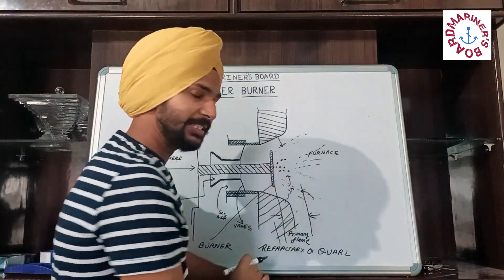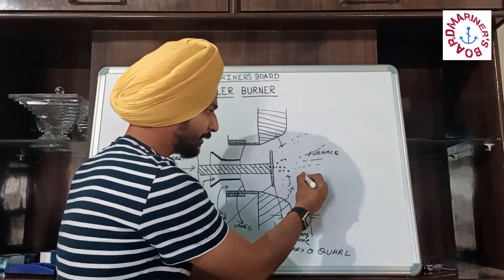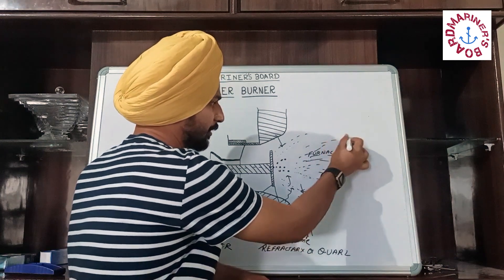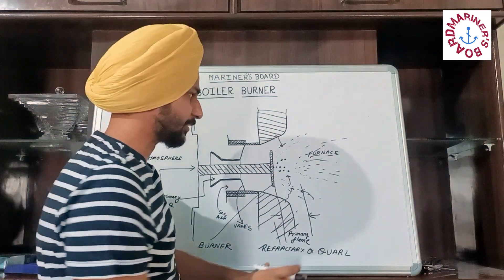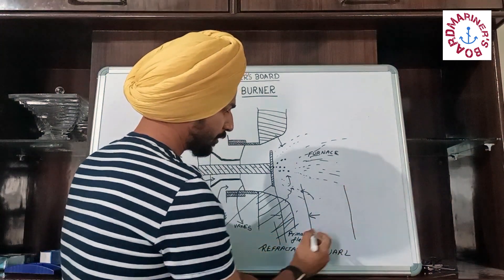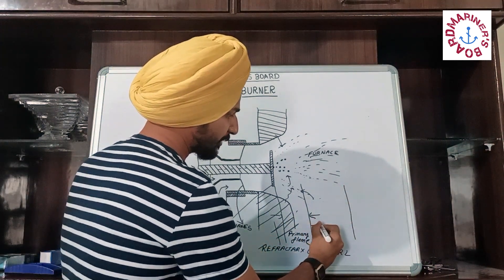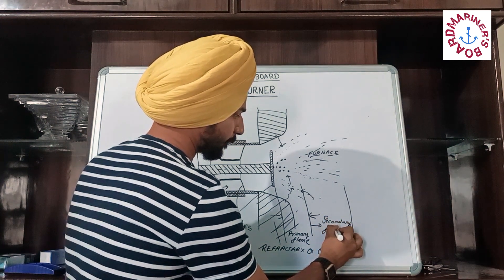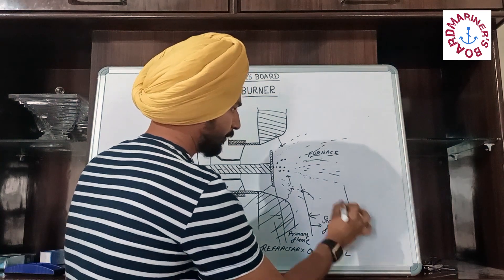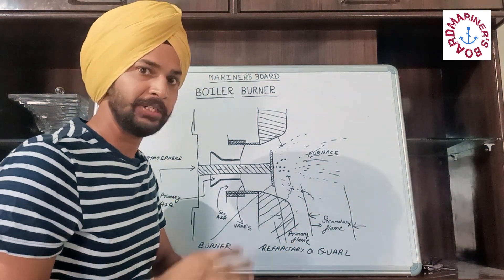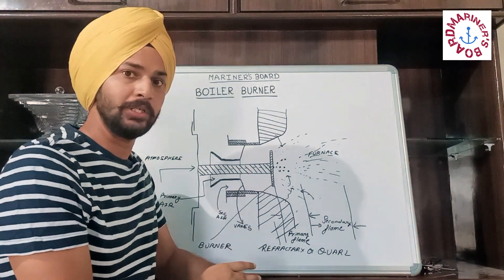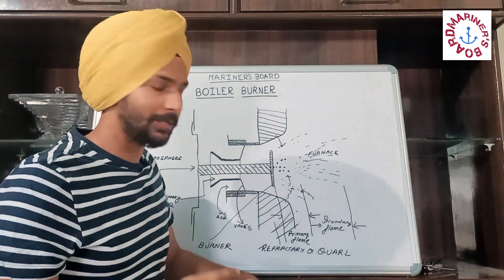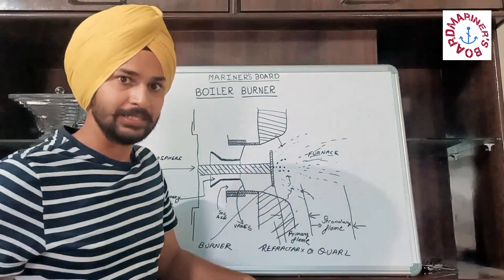Once the fuel has reached its ignition temperature, the fuel coming from this point onward is lighter hydrocarbons because the fuel is already at its ignition temperature. The flame produced after this point is called secondary flame. The work of the secondary flame is to heat the boiler, increase its temperature, and produce steam. So the actual heating job is being done by the secondary flame.